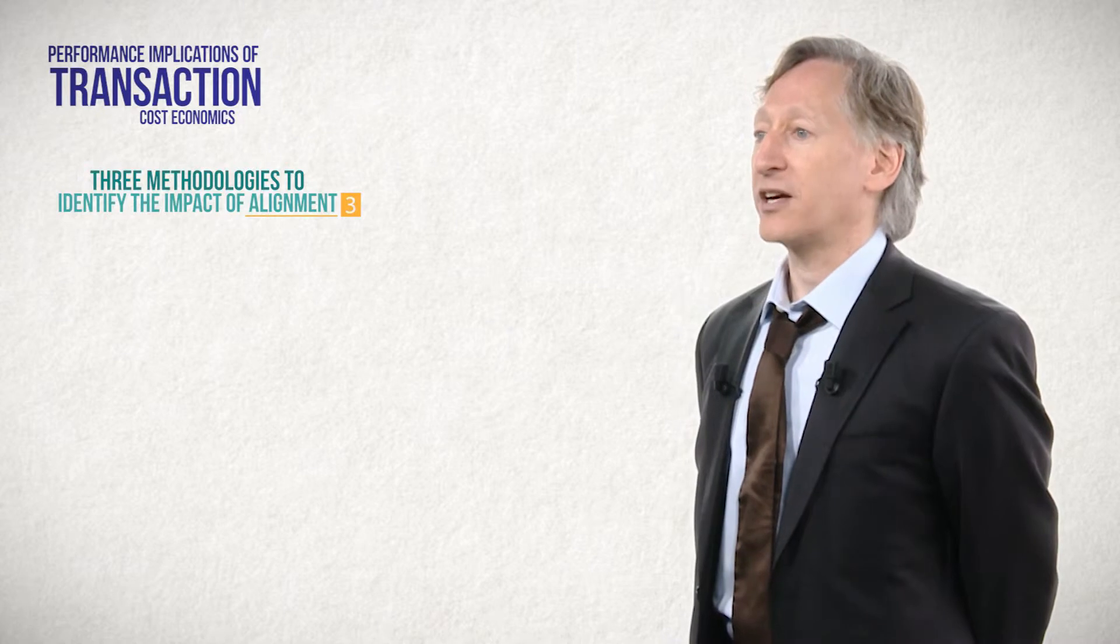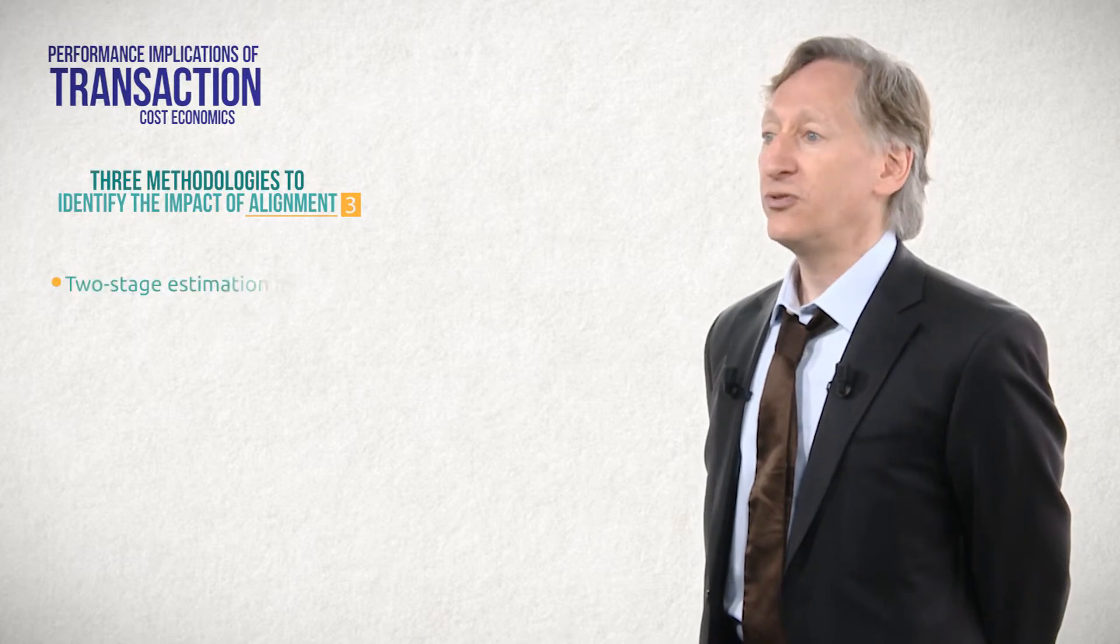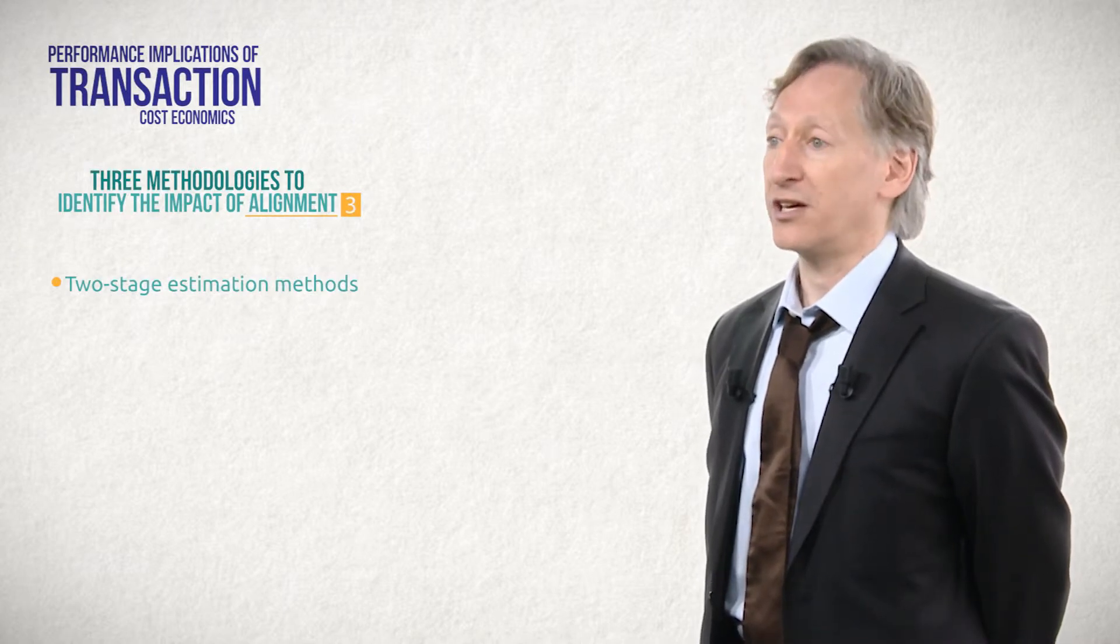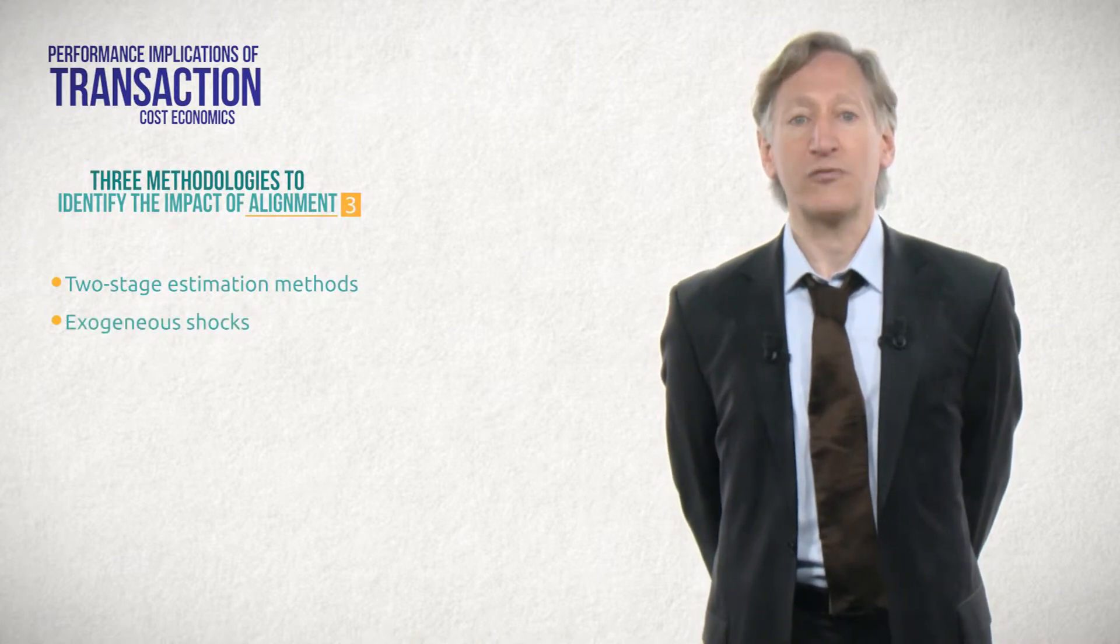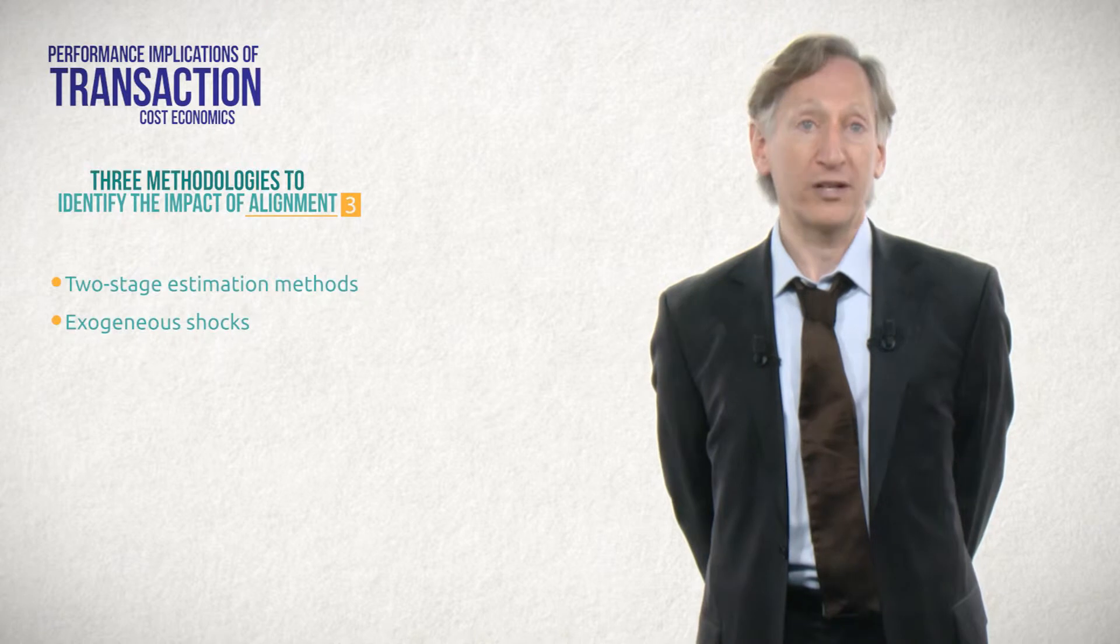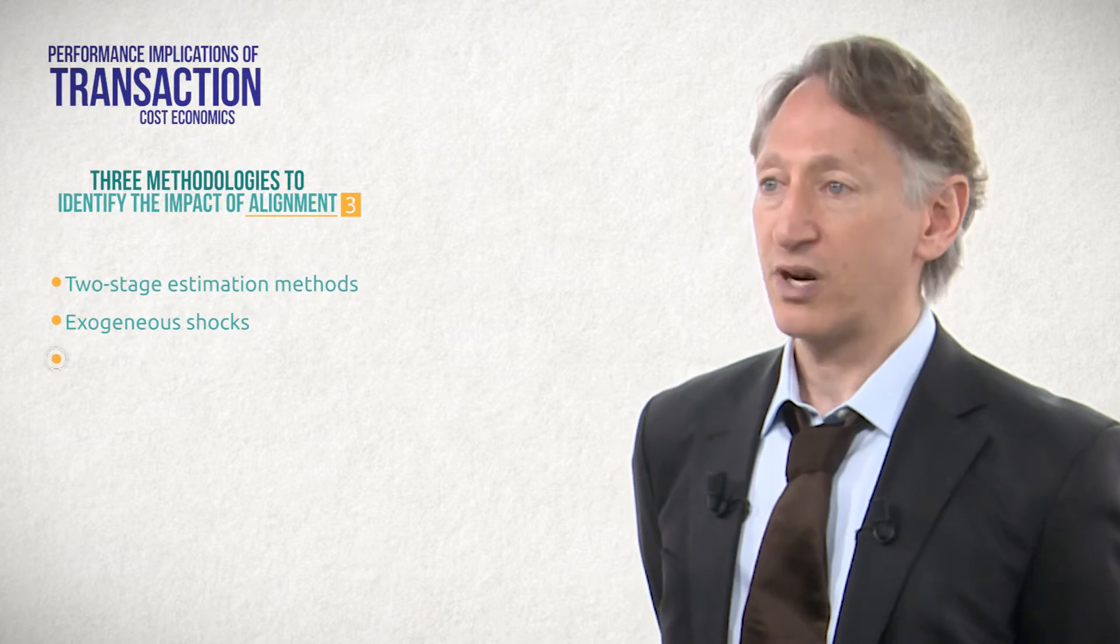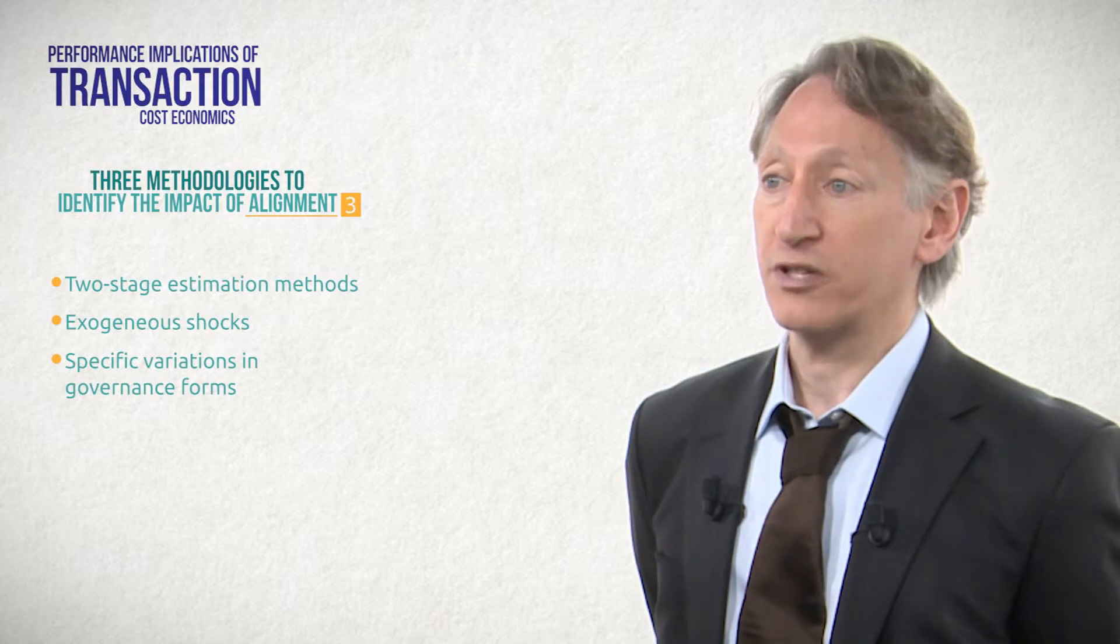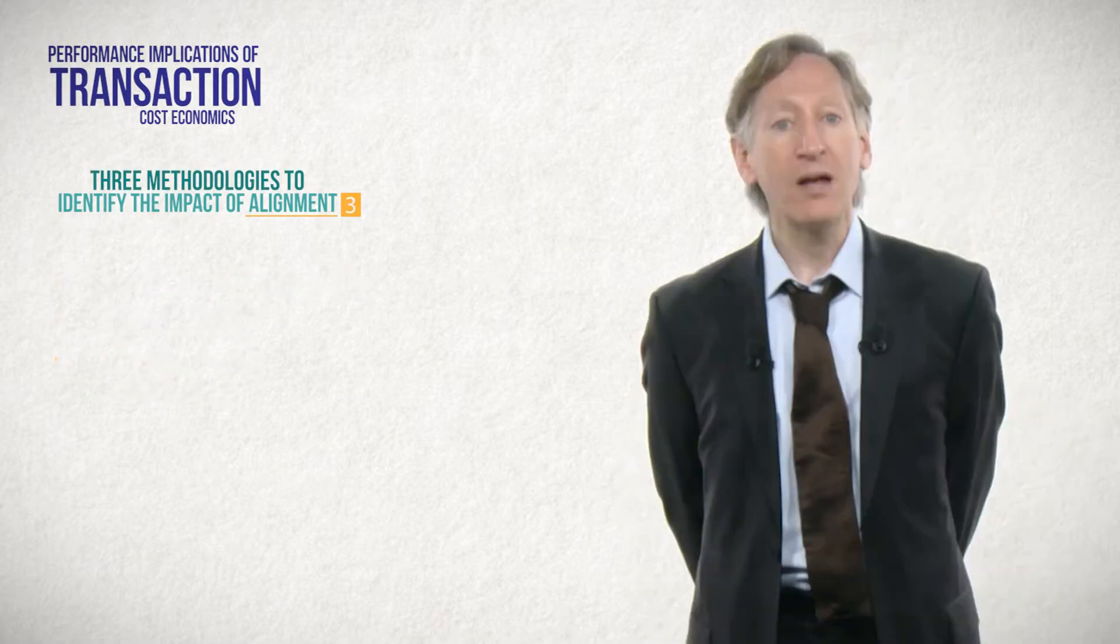TCE scholars have applied three methods to overcome this challenge. The first relies on structural equation models, which use two-stage estimation methods to isolate the performance consequence of a governance choice after accounting for endogeneity. The second identifies a shock that changes the environment in which a firm operates so that it is suddenly misaligned with the new, unexpected environment. The third focuses on the specific advantages associated with different forms of governance. For example, the low fixed setup costs of the market, or the greater ability for vertical integration to facilitate coordinated adaptation, and tests for these specific performance effects. I will give an example of one study that uses each method.